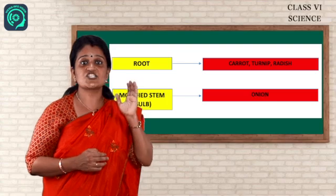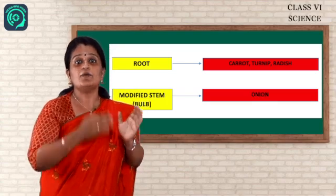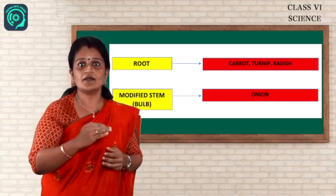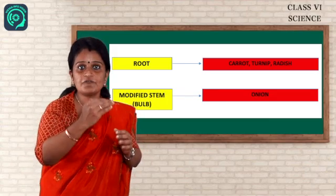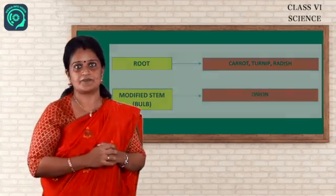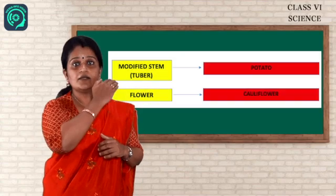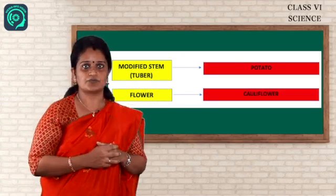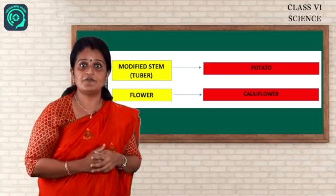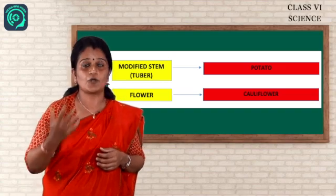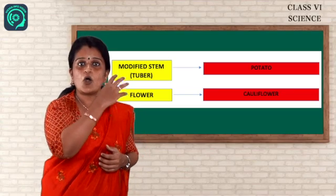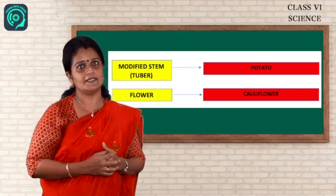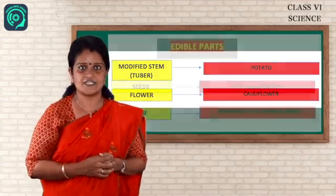Next, that is turnip, beetroot, carrot belongs to the root part. Next one is the onion. That is modified stem and that is the bulb part. Next one is the modified stem, that is tuber part, that is the potato. And the last one, flower, that is cauliflower, broccoli, these are all examples. So these all parts are edible. We can use it in the food items.